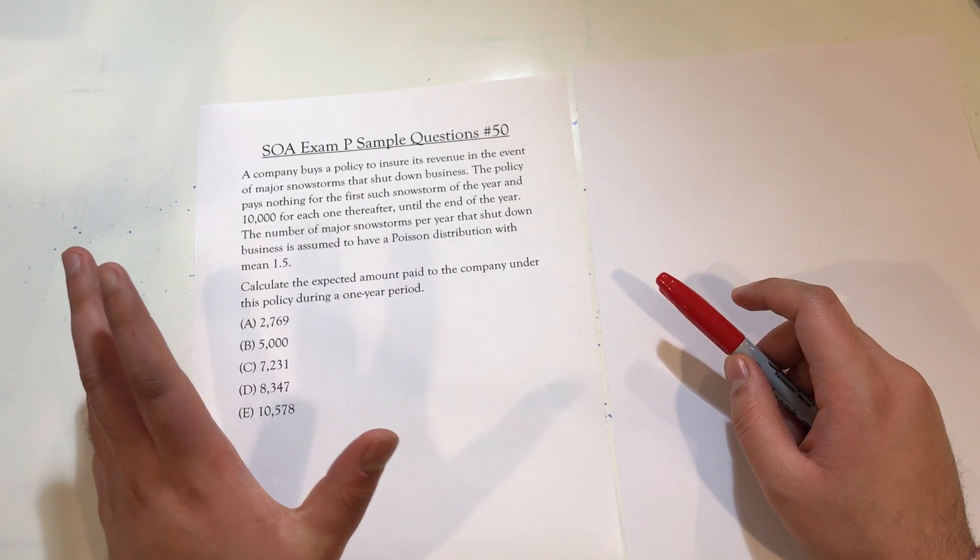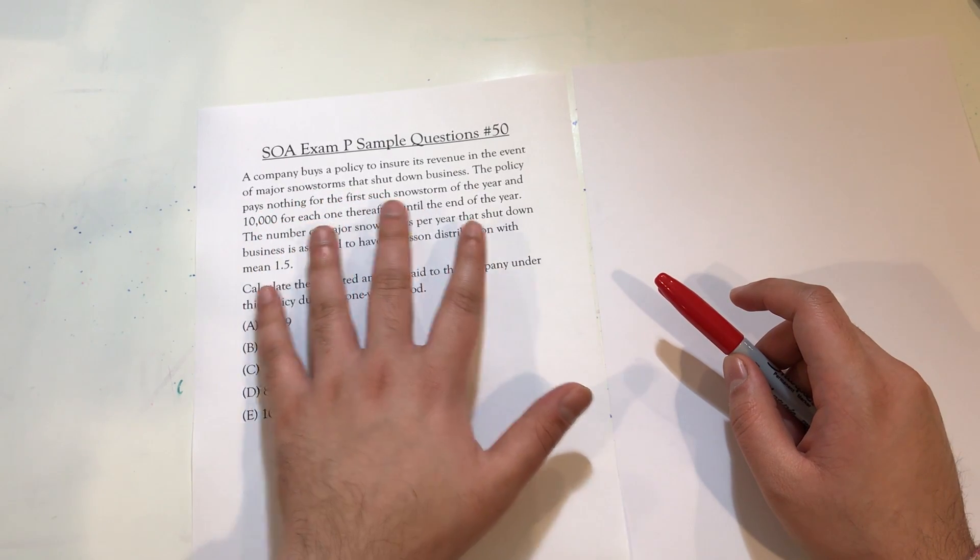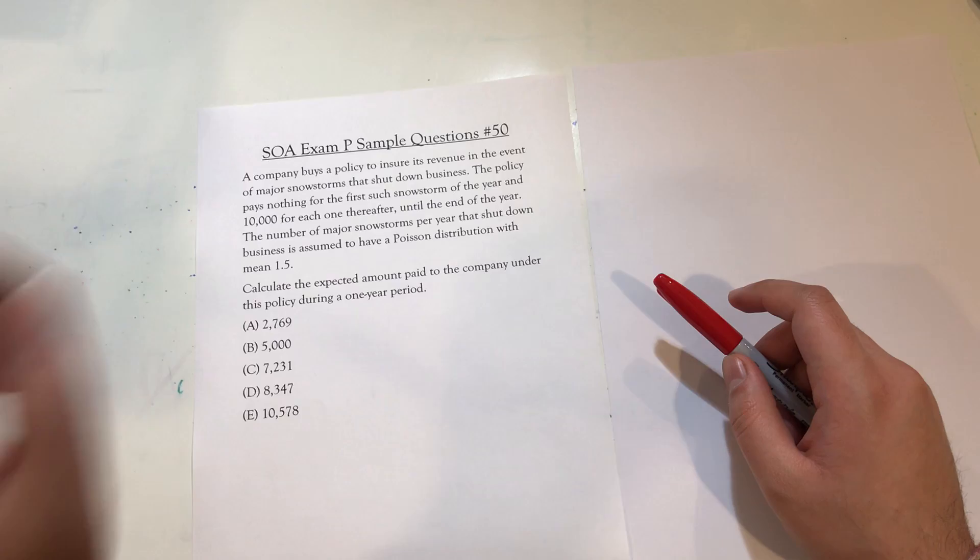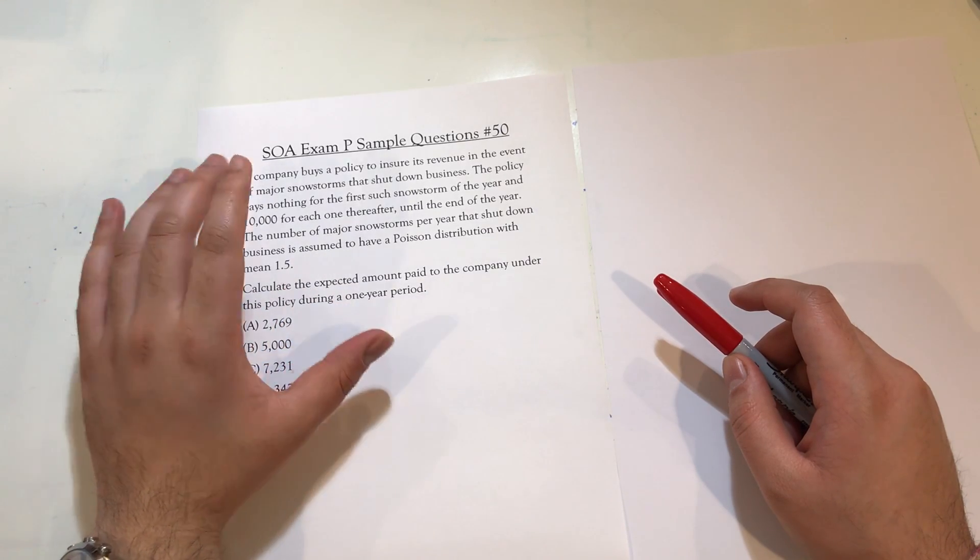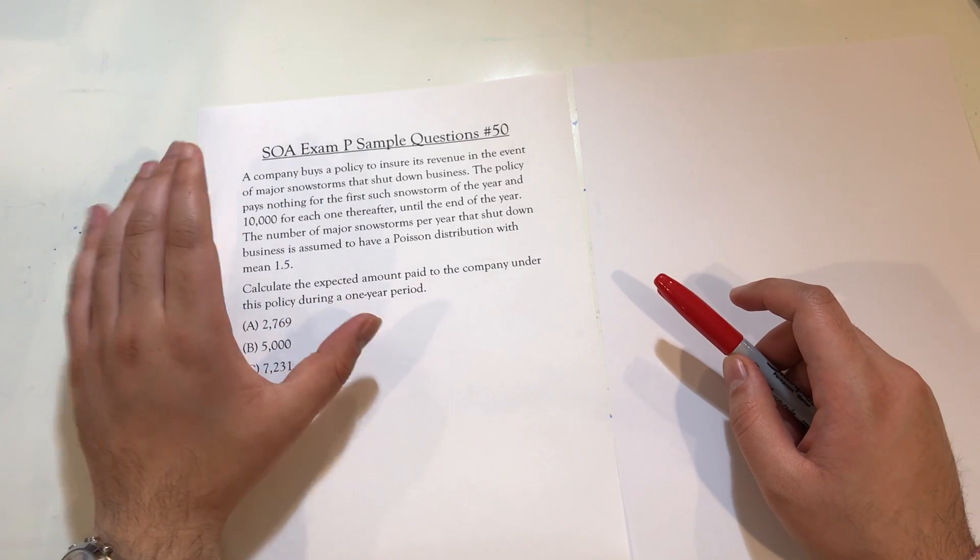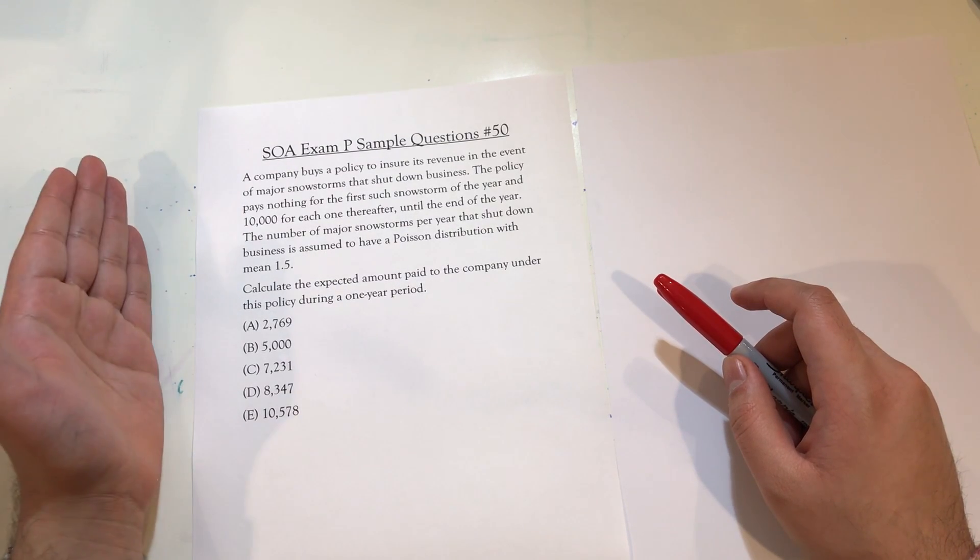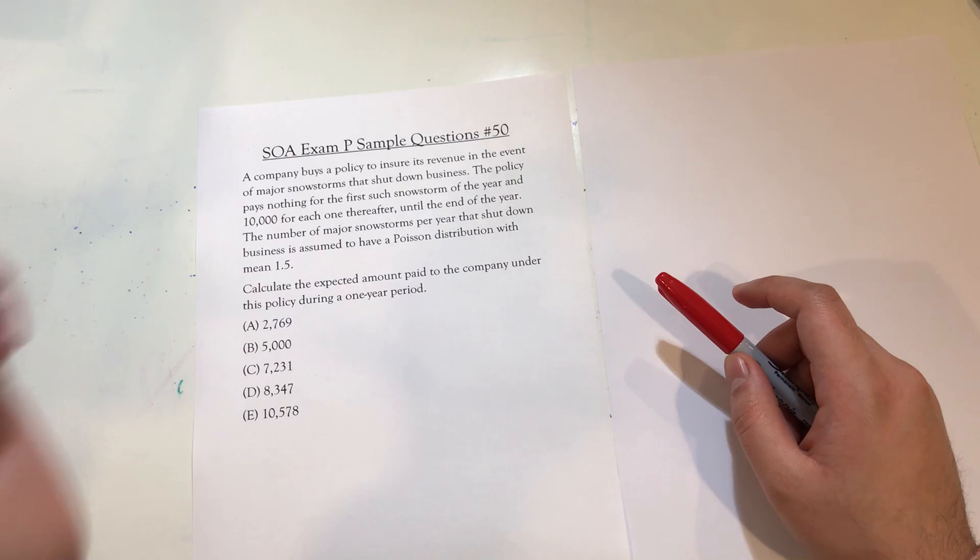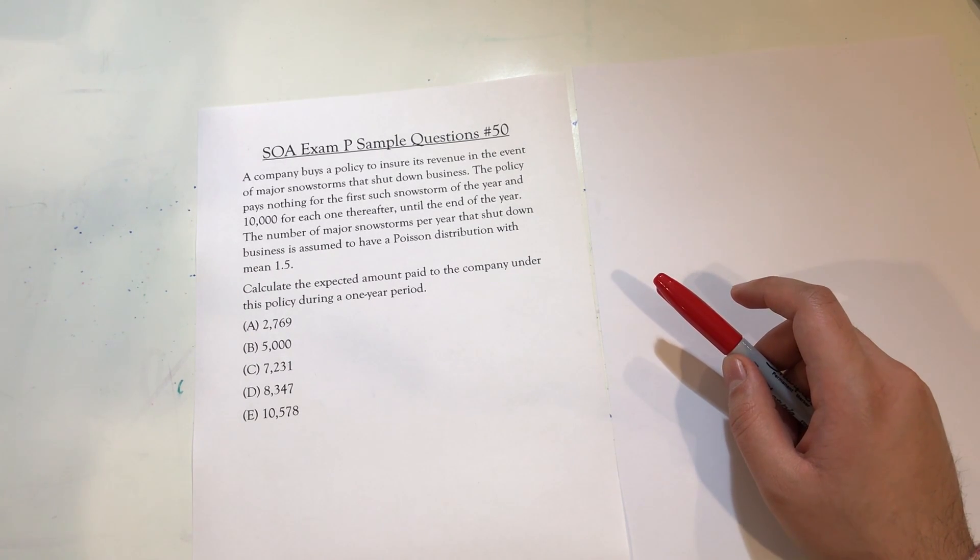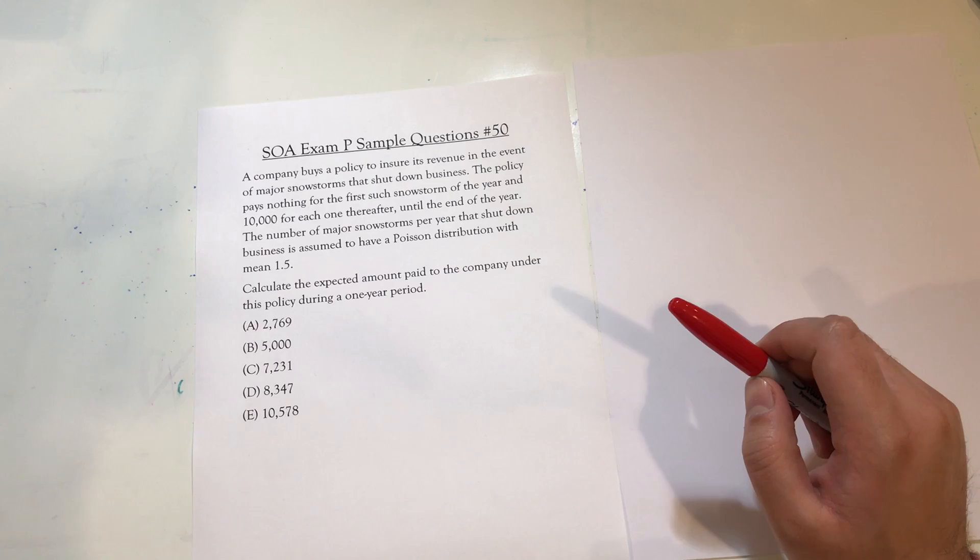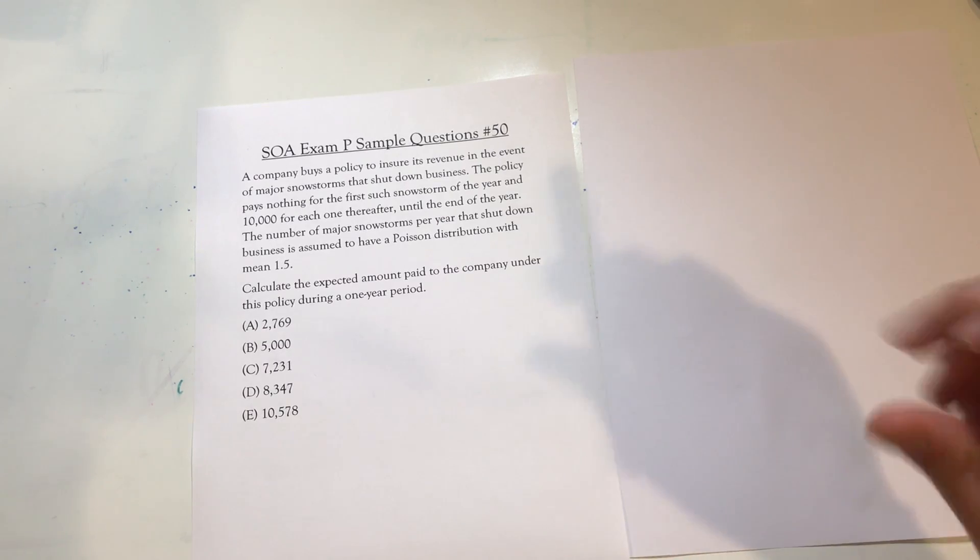A company buys a policy to ensure its revenue in the event a major snowstorm shuts down its business. The policy pays nothing for the first such snowstorm of the year and $10,000 for every one thereafter until the end of the year. The number of major snowstorms per year that shut down a business is assumed to have a Poisson distribution with mean 1.5.